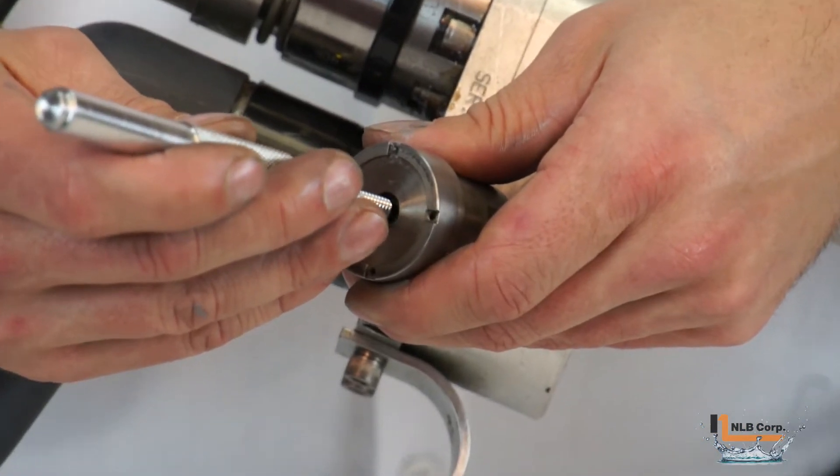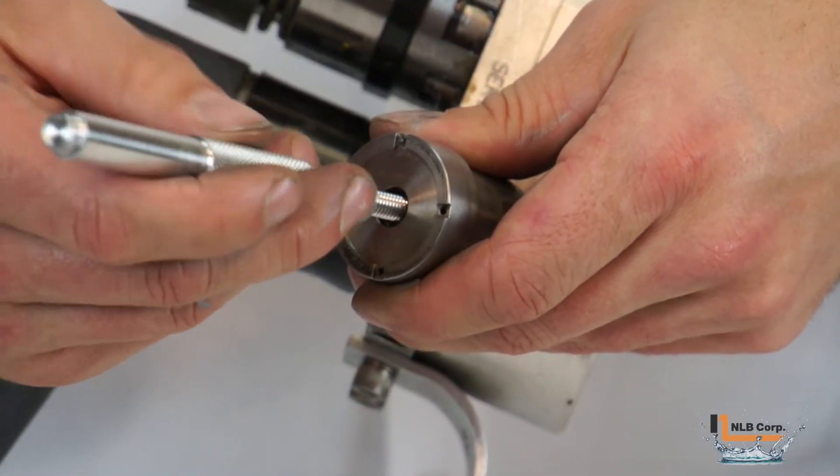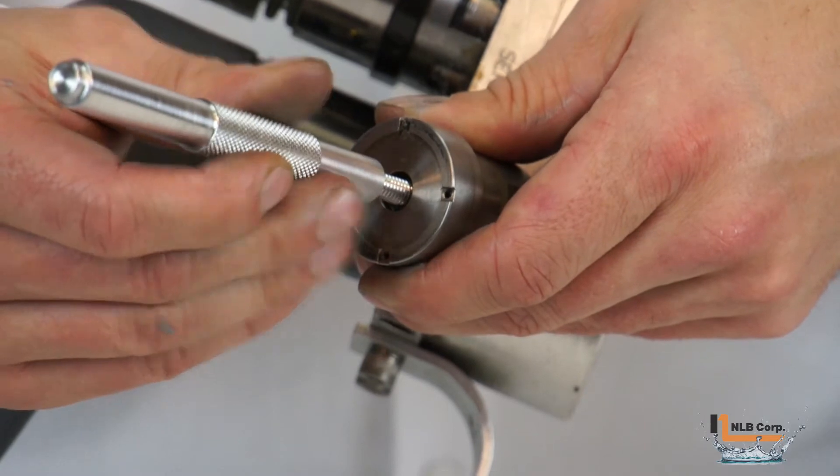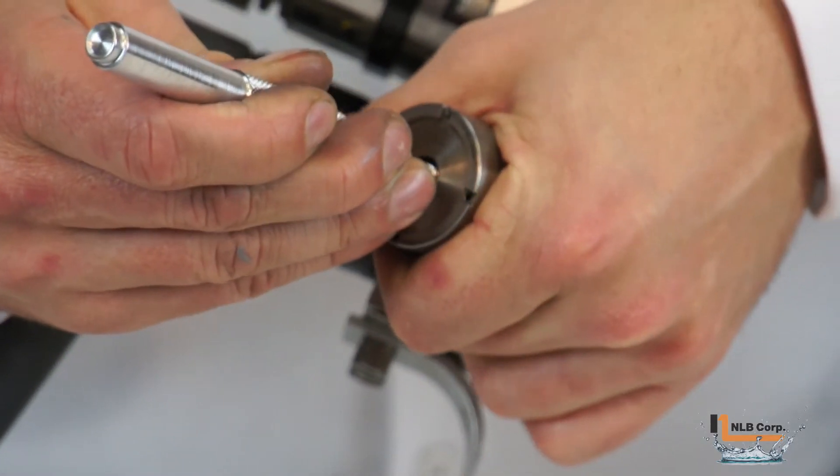Next, use the aluminum seal tool and thread it into the old high pressure seal. You can now pull the tool and the high pressure seal out of the housing.